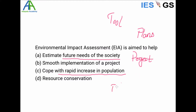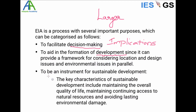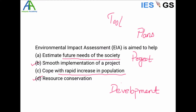We are concerned with economic development, so we have a confusion between two options: smooth implementation of a project and resource conservation. The larger aim of EIA is sustainable development, which involves maintaining overall quality of life with socio-economic considerations, conserving natural resources without depletion, and not damaging the environment. Therefore, resource conservation is the better option as it aligns with the larger objective of EIA, so D is the answer.